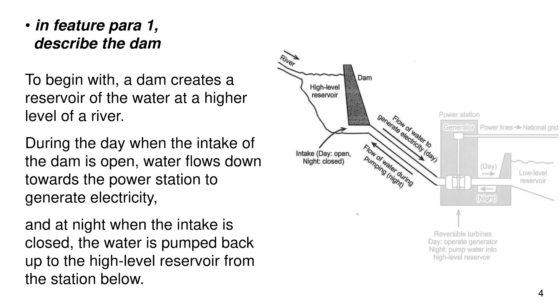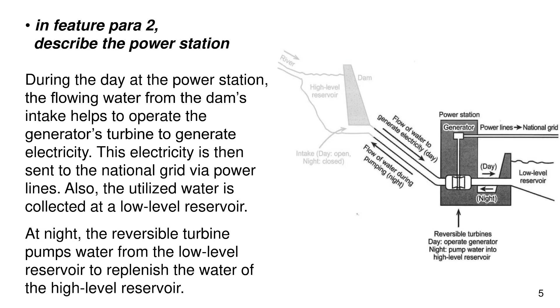In feature paragraph 2, describe the power station. During the day at the power station, the flowing water from the dam's intake helps to operate the generator's turbine to generate electricity. This electricity is then sent to the national grid via power lines. Also, the utilized water is collected at a low level reservoir.